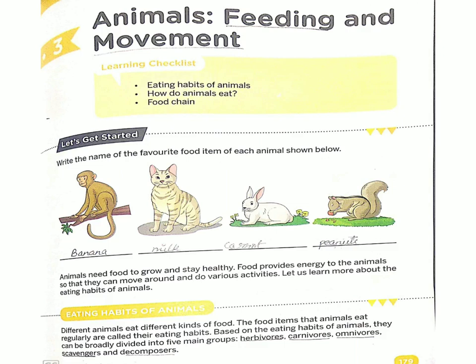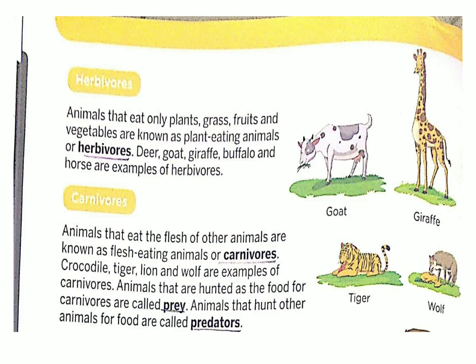First is herbivores. Animals that eat only plants, grass, fruits, and vegetables are known as plant eating animals or herbivores. Woh animals jo sirf plants, grass, fruits, and vegetables khate hain, unhain plant eating animals ya herbivores kaha gaya hai. Like deer, goat, giraffe, buffalo, and horse are examples of herbivores.